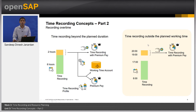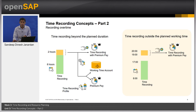In clock-based time recording, if an employee records time in the night hours outside of planned working time, the only way of marking this time recording as relevant for overtime is manually assigning the appropriate premium pay to that time record entry. There is no automatic handling of overtime in clock-based time recording.